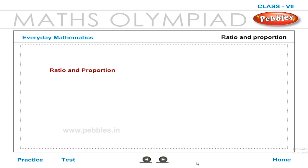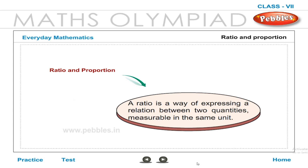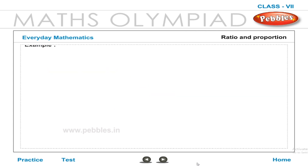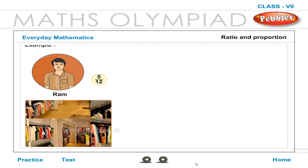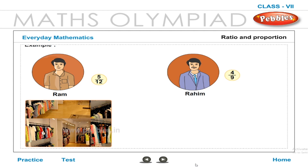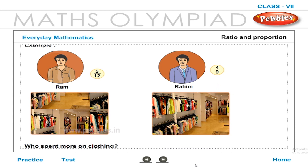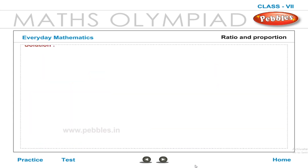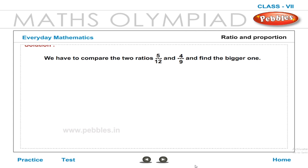Ratio and Proportion: A ratio is a way of expressing a relation between two quantities measurable in the same unit. Example — Ram spent 5/12 of his salary on clothing. Rahim spent 4/9 of his salary on clothing. Who spent more on clothing? We have to compare the ratios 5/12 and 4/9 and find the bigger one.